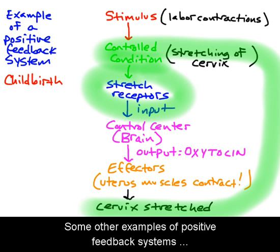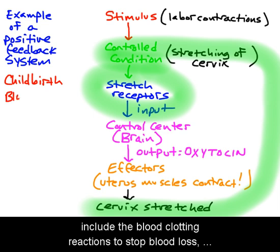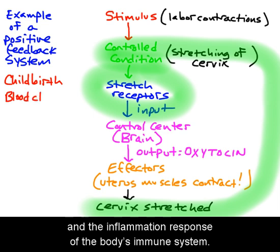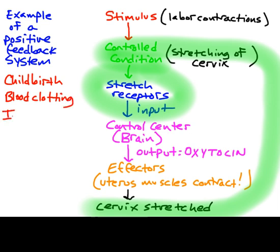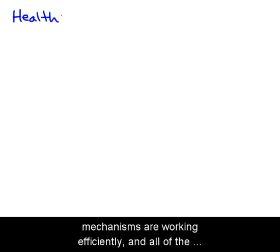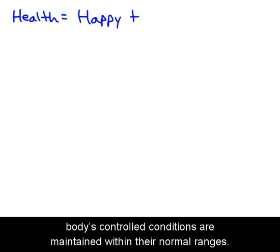Some other examples of positive feedback systems include the blood clotting reactions to stop blood loss, and the inflammation response of the body's immune system. A healthy body is one where all of the homeostatic mechanisms are working efficiently, and all of the body's controlled conditions are maintained within their normal ranges.